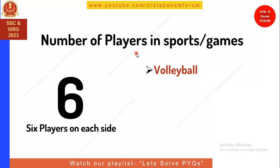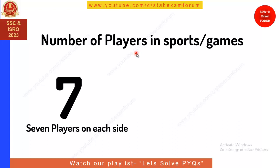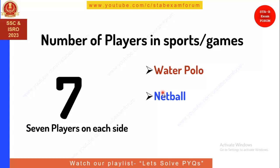Seven players on each side is very important. The first sport is water polo — note the difference: polo on ground has four players per side, while water polo has seven. The next sport is netball, which also has seven players on each side. And our Indian traditional game Kabaddi also has seven players on each side — remember this.